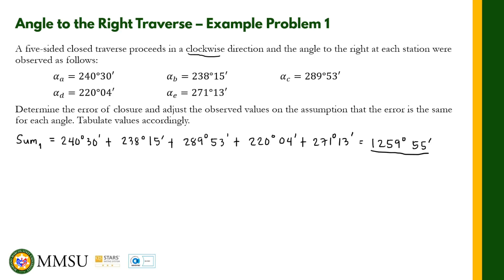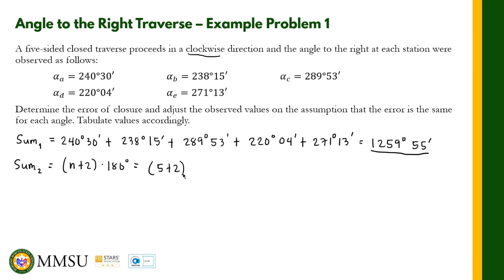We need to compare this to the theoretical sum. As stated previously, the sum should equal (n+2) times 180 degrees — let's call this Sum 2. Here, n equals 5 because there are 5 angles, so that's (5+2) times 180 degrees, which is 7 times 180 degrees, giving us 1260 degrees.